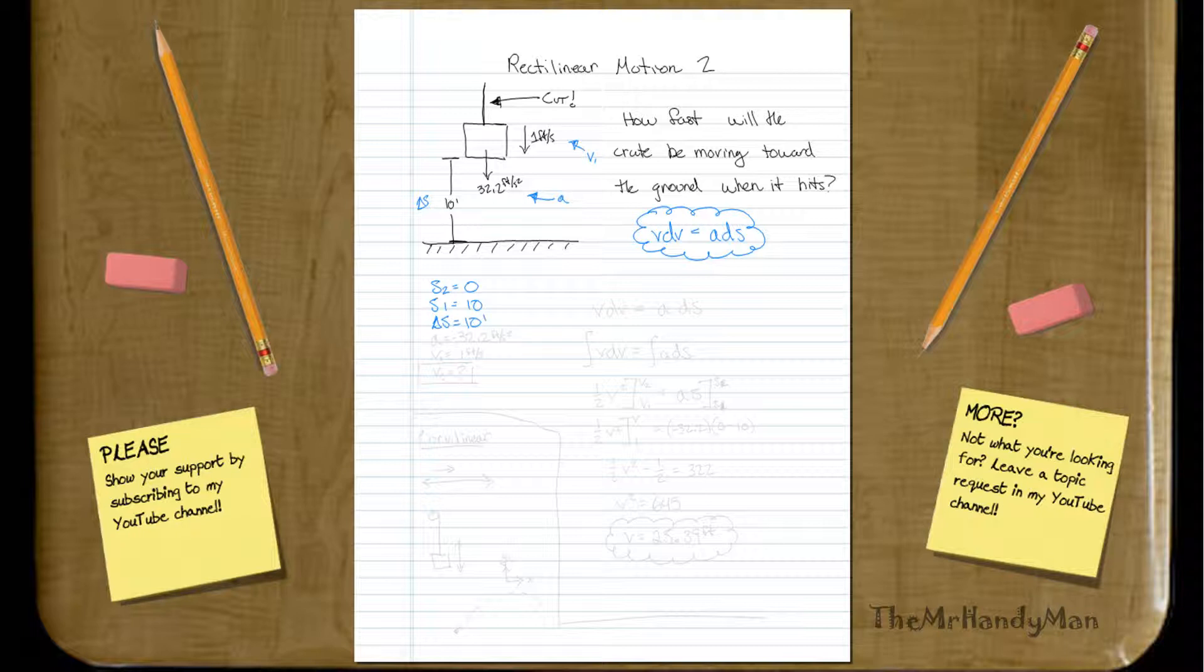So then we have acceleration, which is going to equal 32.2 feet per second squared, and then we also have a velocity, which I'm going to call velocity 1, and that's 1 foot per second. We do not know v2, and that's what we want to know.